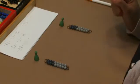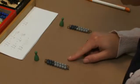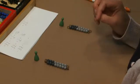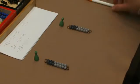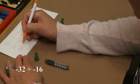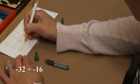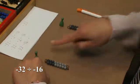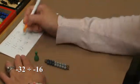So now we're going to record our work. I've asked the students to divide negative 32 into groups of negative 16. So we have negative 32 divided by negative 16, and that leaves us with positive 2.